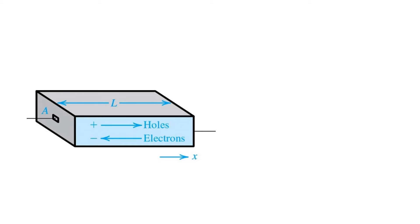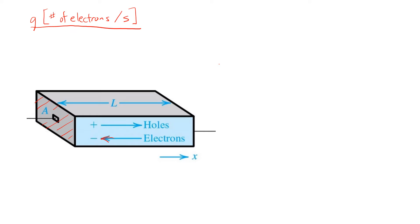If we consider a block of semiconductor material and take a cross-section across it with area A, we can quantify the current flow across that cross-section as follows. Let's imagine that a certain number of electrons are flowing from right to left across that surface — the number of electrons flowing per second crossing that cross-sectional area A. Each electron carries a charge Q equal to the fundamental electronic charge, and it flows across that cross-sectional area A. This is a measure of the current density flowing due to the movement of electrons in the semiconductor.